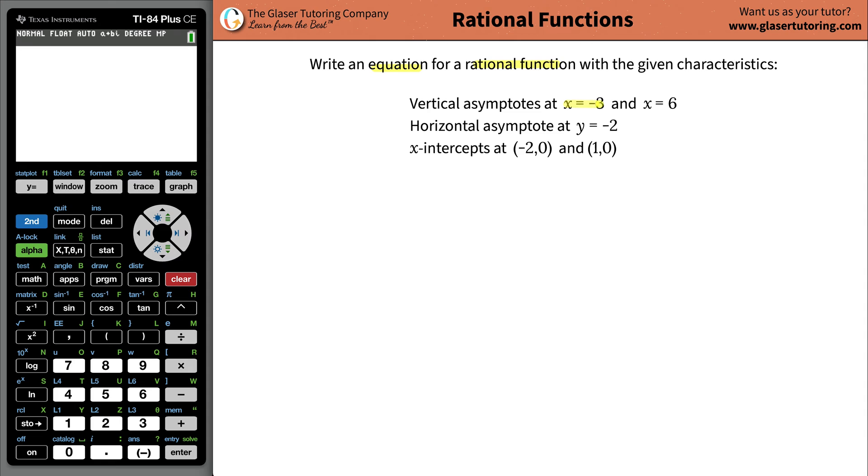You have the vertical asymptotes at x equals negative 3 and 6. You have a horizontal asymptote at y equals negative 2, and x-intercepts here at negative 2 and 1.